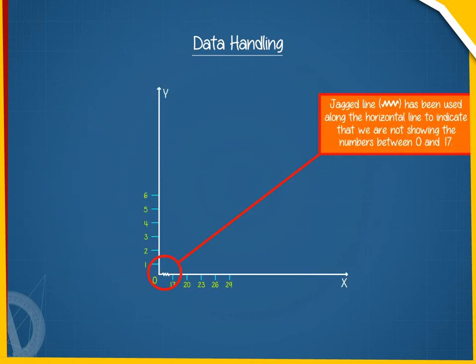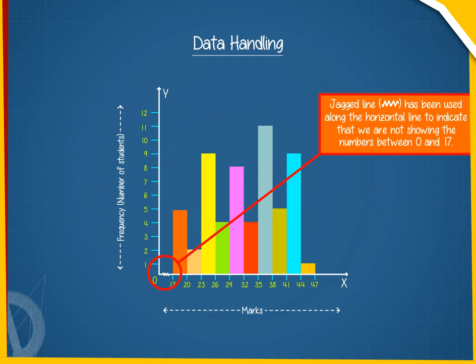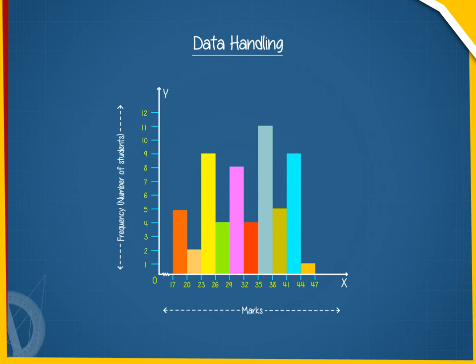Jagged line has been used along the horizontal line to indicate that we are not showing the numbers between 0 and 17. This graph of grouped frequency distribution is called a histogram.